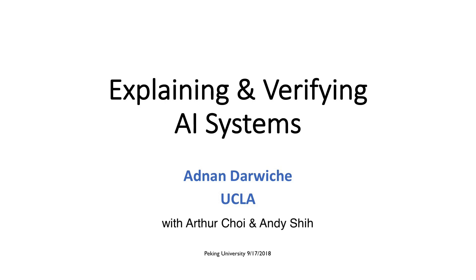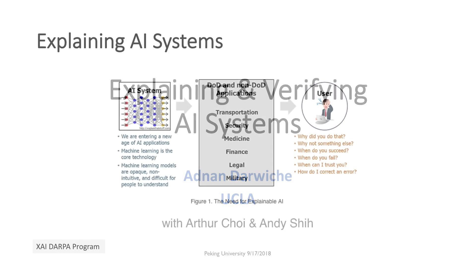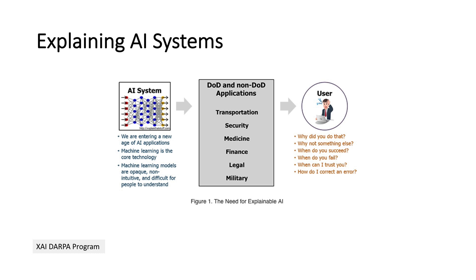Today I'll talk about explaining and verifying AI systems, which has become an important topic recently with the deployment of AI systems in the real world. There is now a need to understand the decisions that these systems are making — why did they make a decision — and before deployment we may need to verify their properties and prove that they'll work well. In the United States there's a major DARPA effort and a program called XAI, Explainable AI, which is dedicated to this subject.